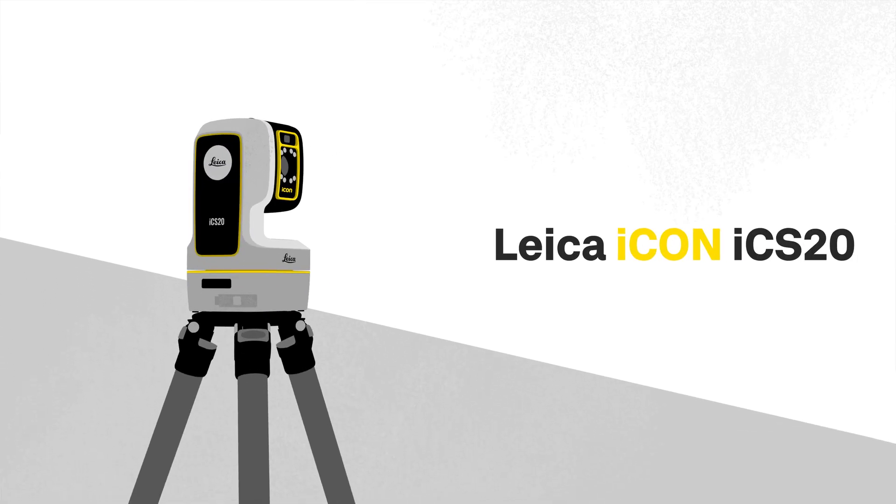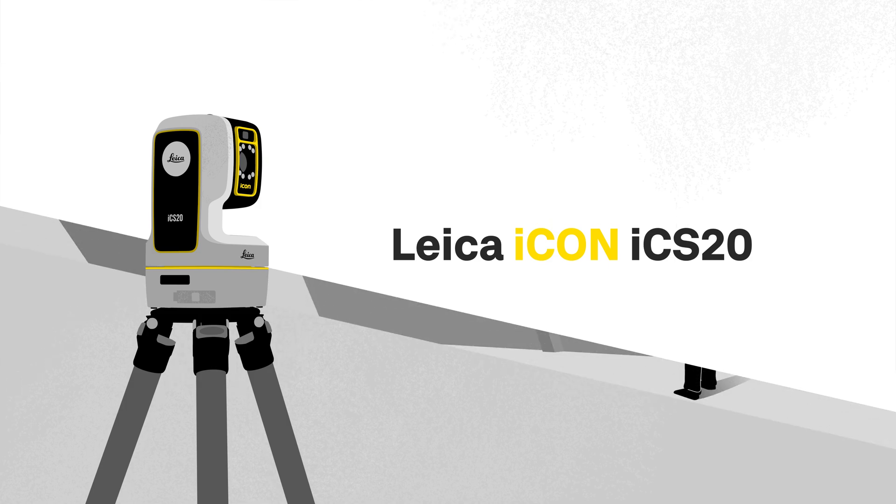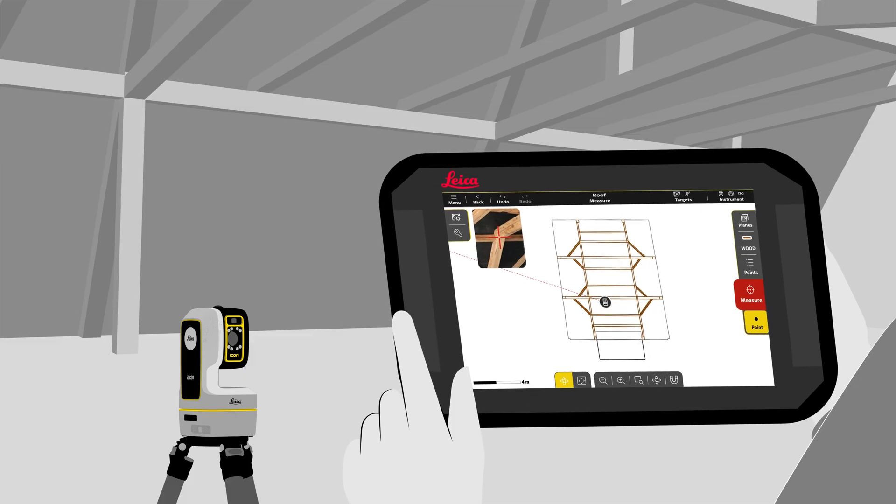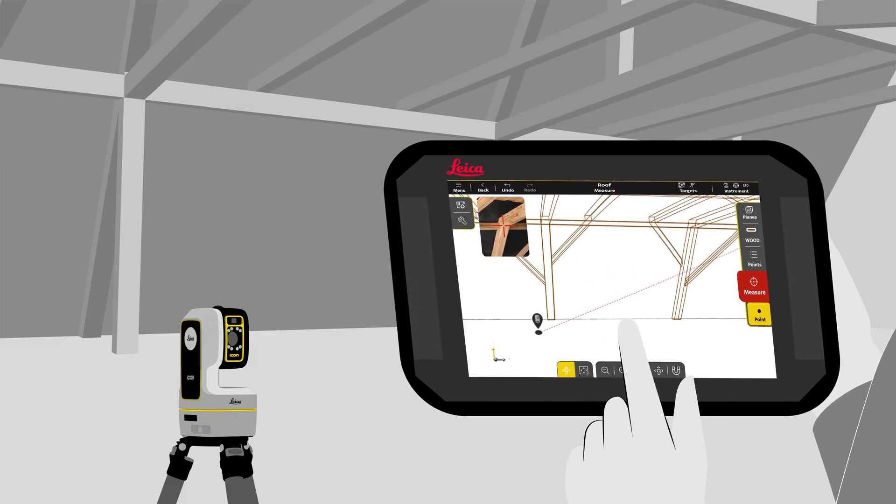With Leica Icon ICS20, it is much easier to capture high-precision measurement data even from hard-to-reach points. You can immediately see what you measure on a 2D plan or 3D model on your tablet.